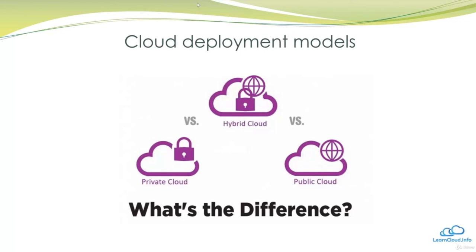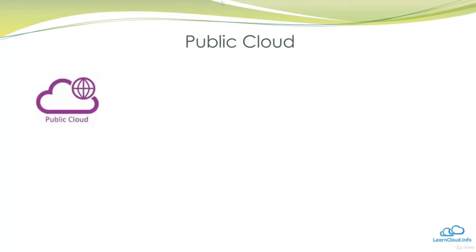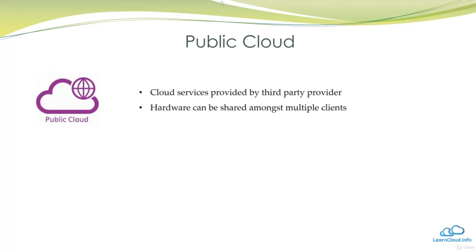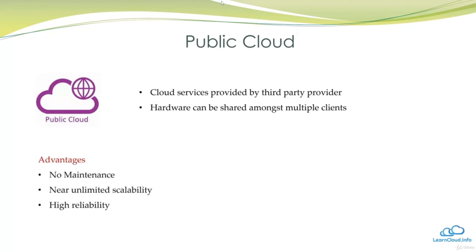A cloud deployment model defines where your data is stored, how your customers interact with it, how they get to it, and where the applications run. There are three different types: public, private, and hybrid. The public cloud is probably the most popular — in this case there is no local hardware to manage or keep up to date. Everything runs on your cloud provider's hardware; you simply use your browser to access services and share hardware, storage, and network devices with other organizations.